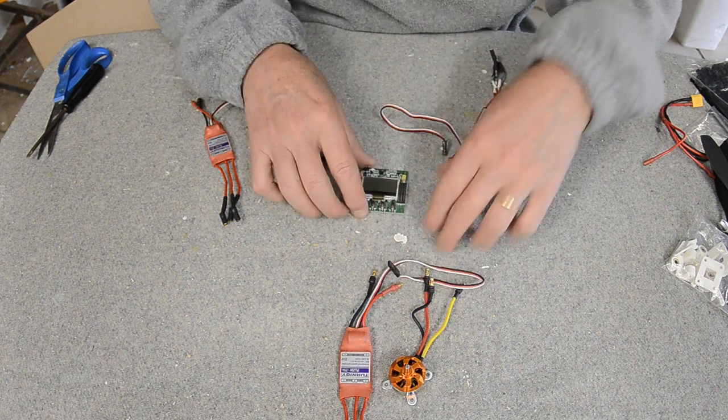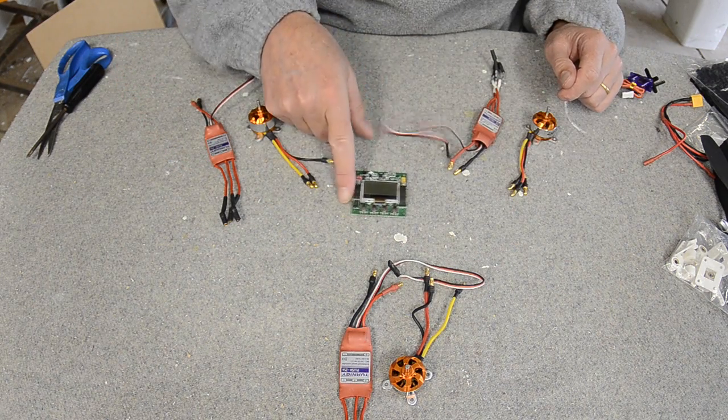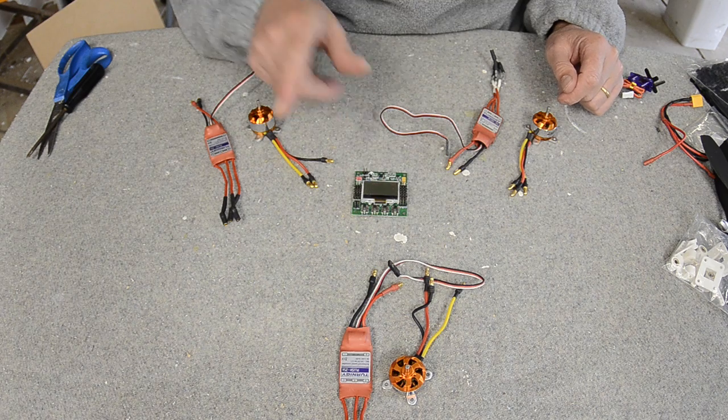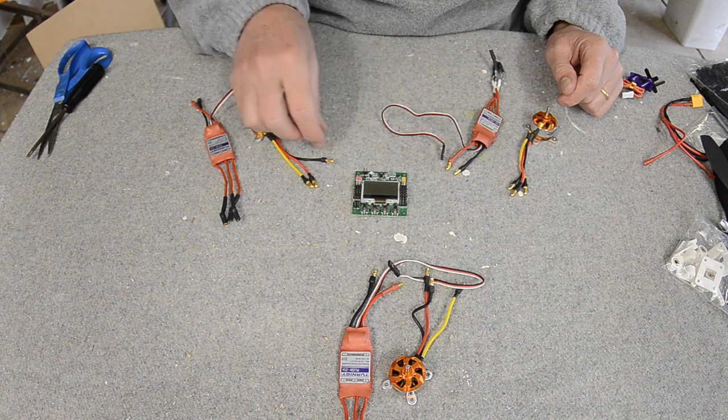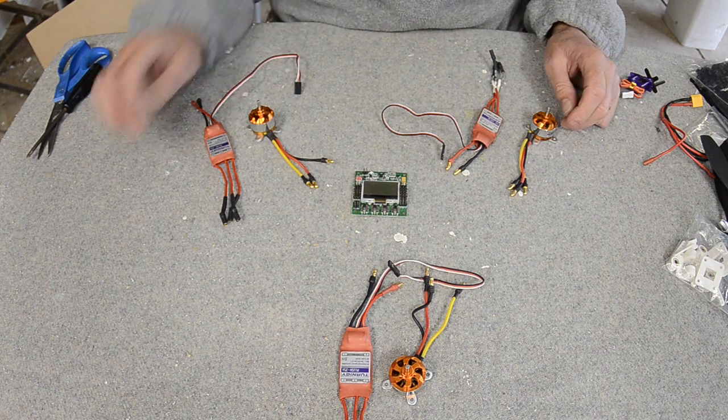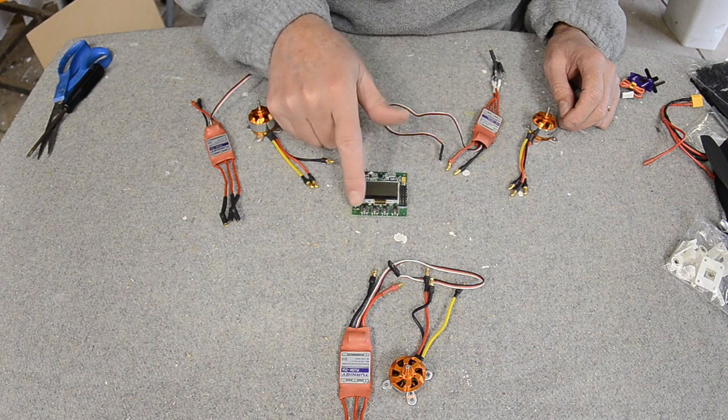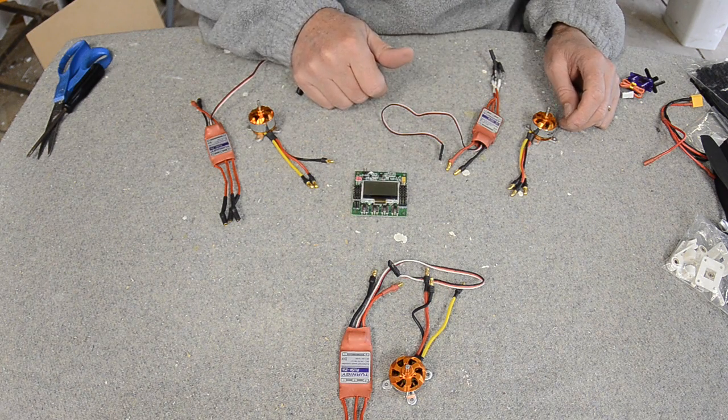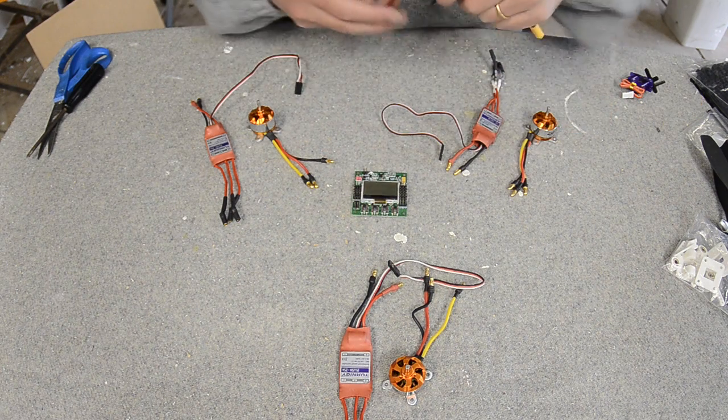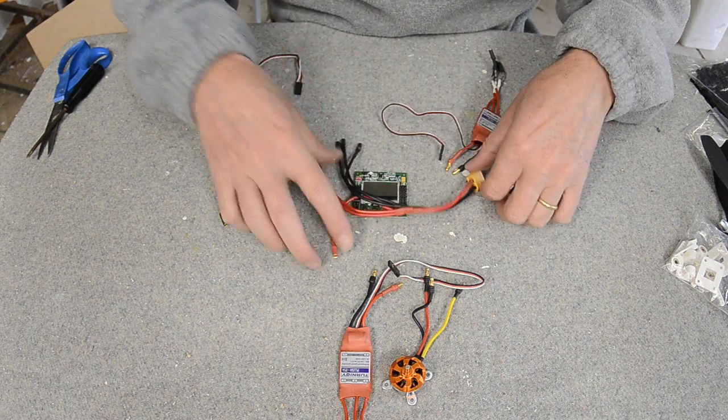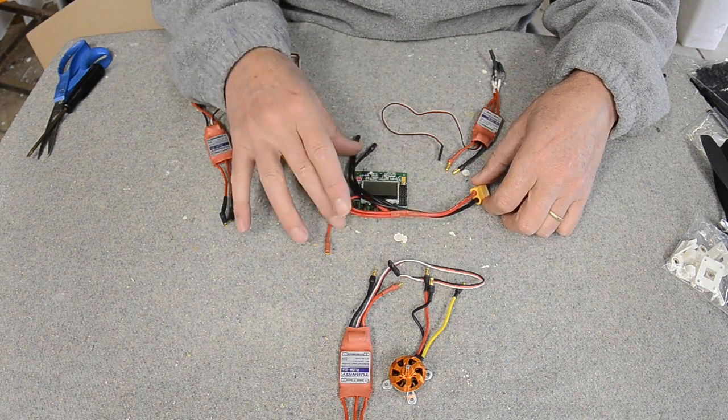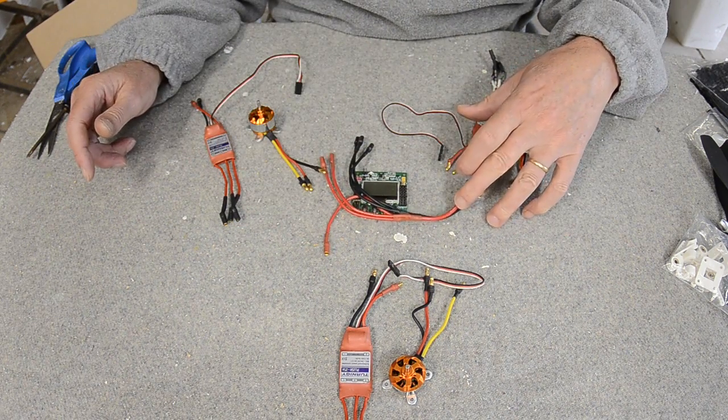The brains of the multirotor is the control board. This is a KK2 board which is one of the cheapest and simplest, about $26 from Hobbyking. All the programming is done on the LCD screen via these four buttons, and they're all connected together via a power distribution cable, also from Hobbyking, again very cheap.